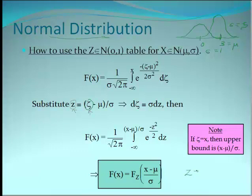Our magical formula: z values are always equal to x — where x might be the weight of a particular car — minus the average weight of a car, over whatever our standard deviation is. That's what our z-value is. It's the same idea as before, we've just normalized it.